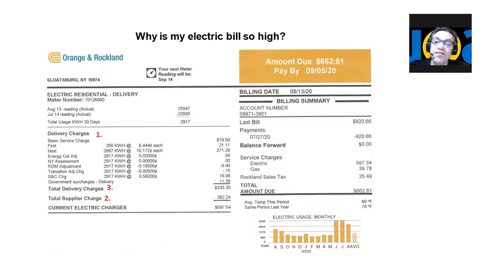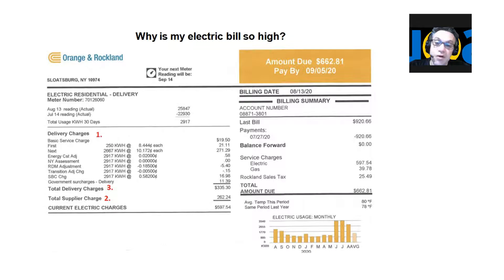And finally, number three: the delivery charges. They cover the infrastructure used to transfer the energy from its original source directly to your home. In this example, the delivery charges are more than half of the entire monthly electric bill.